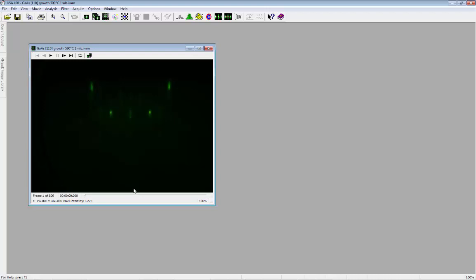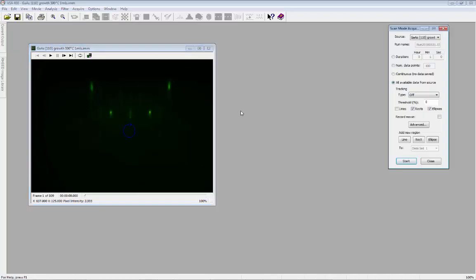Select Scan Mode from the Acquire menu or use the icon in the toolbar. Select the desired source. In this case, I will select all available data from the source, but I could also choose a specific time duration. Adjust the region of interest to correspond to the first order spot. Add a new region and adjust it to correspond to the other first order spot.